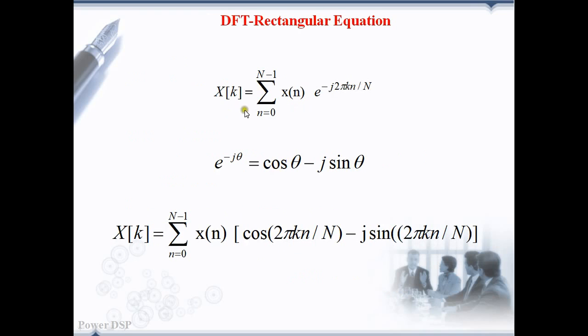This equation is actually in an exponential form. It is little bit unfriendly to understand what is going on inside this equation. So, we have to convert it into rectangular form by expanding it using Euler's equation. The Euler's equation is e power minus j theta is equal to cos theta minus j sine theta.